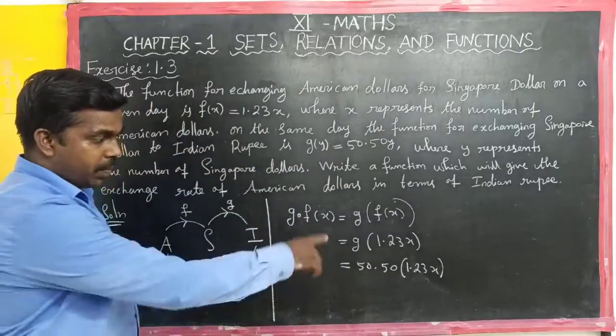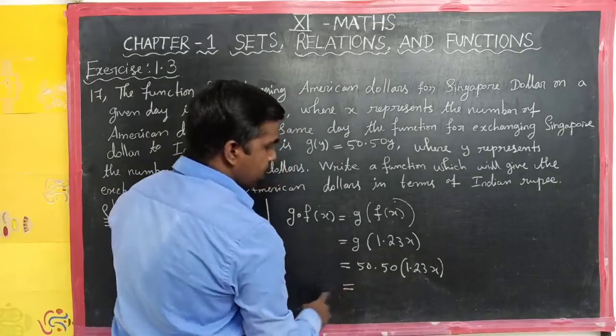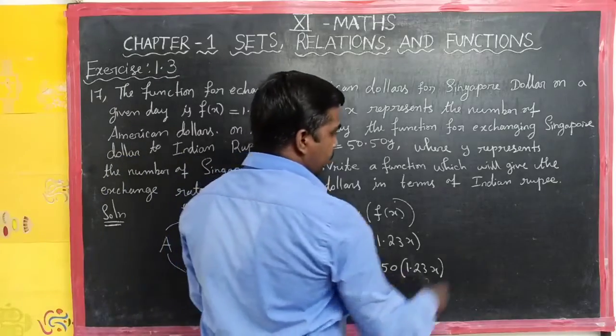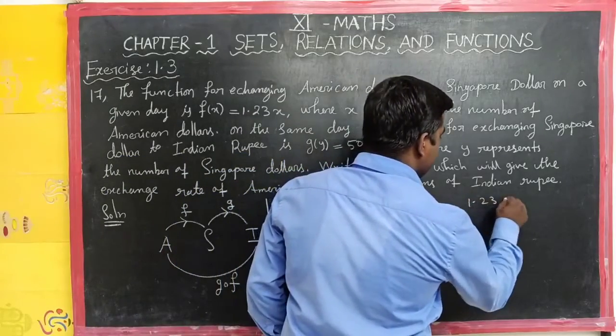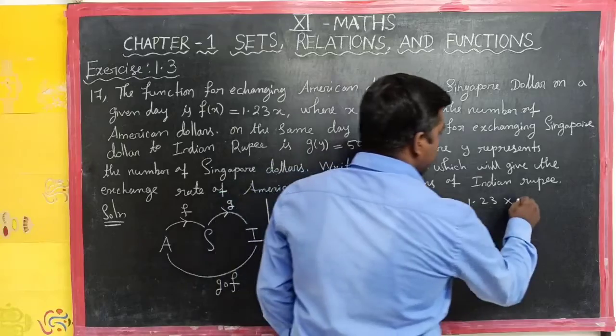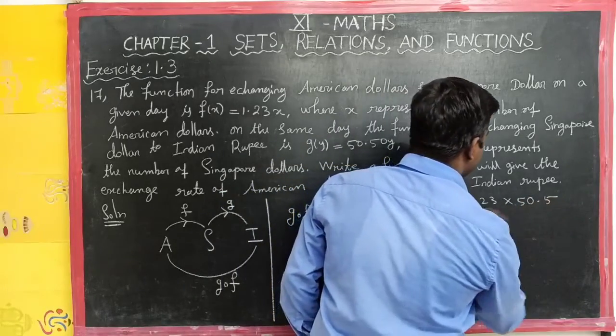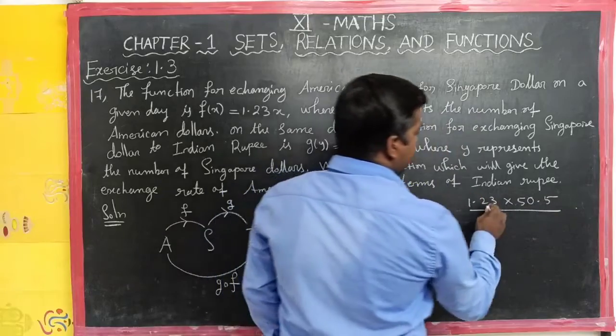So 50.50 into where y is, 1.23x. We multiply to get the required function.